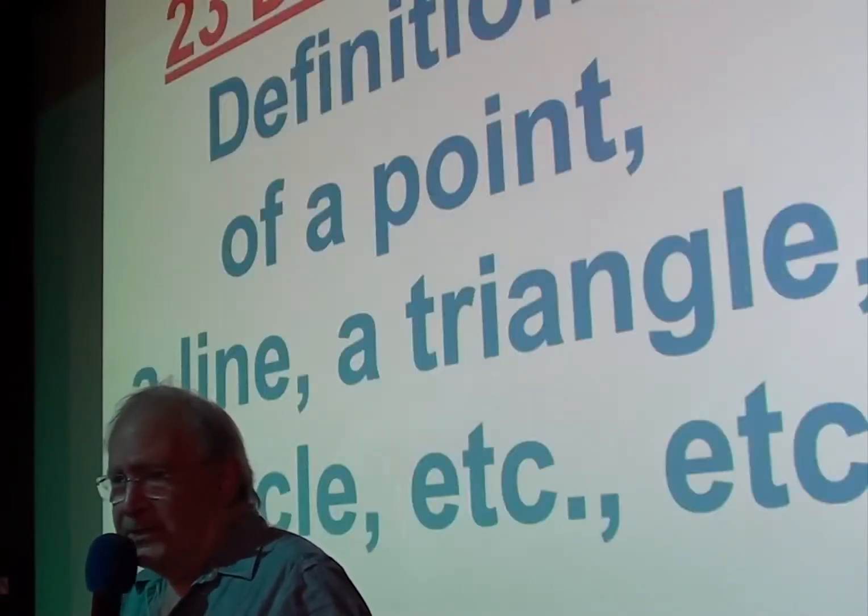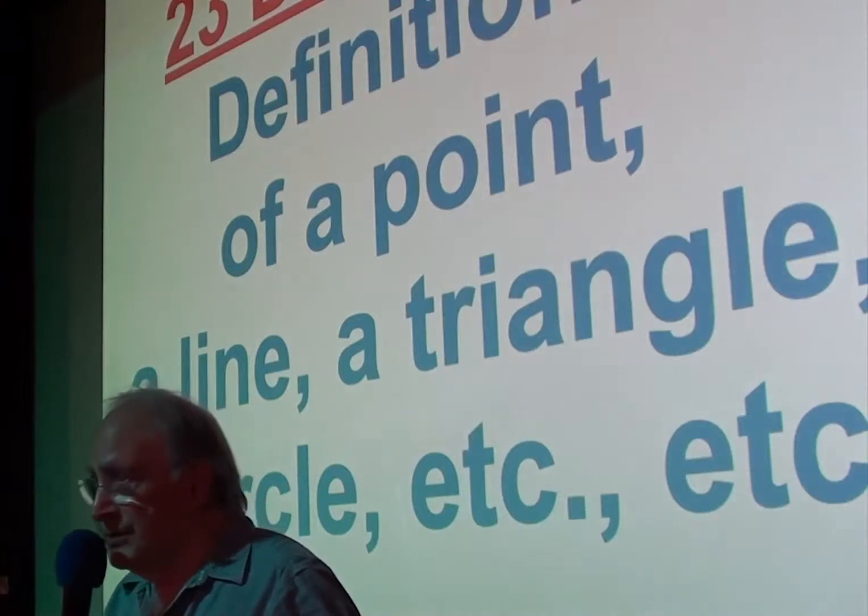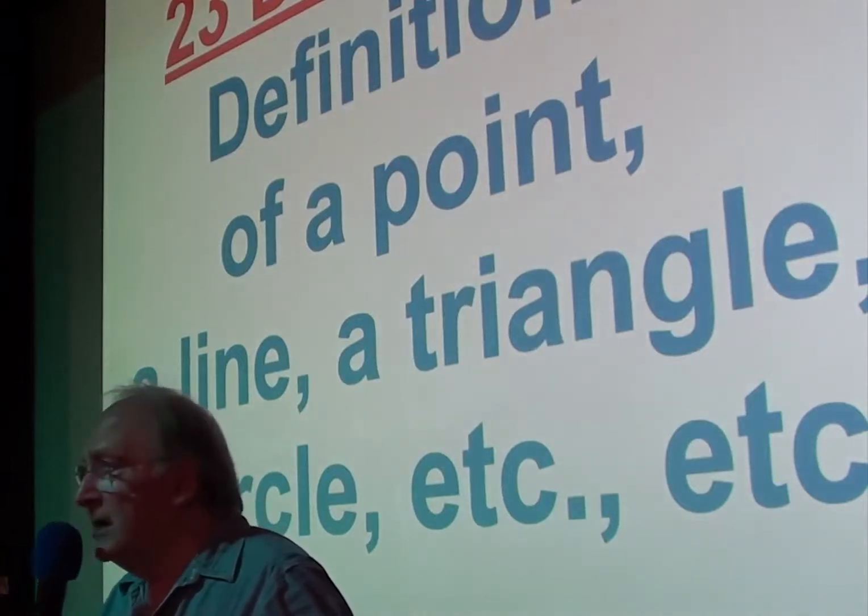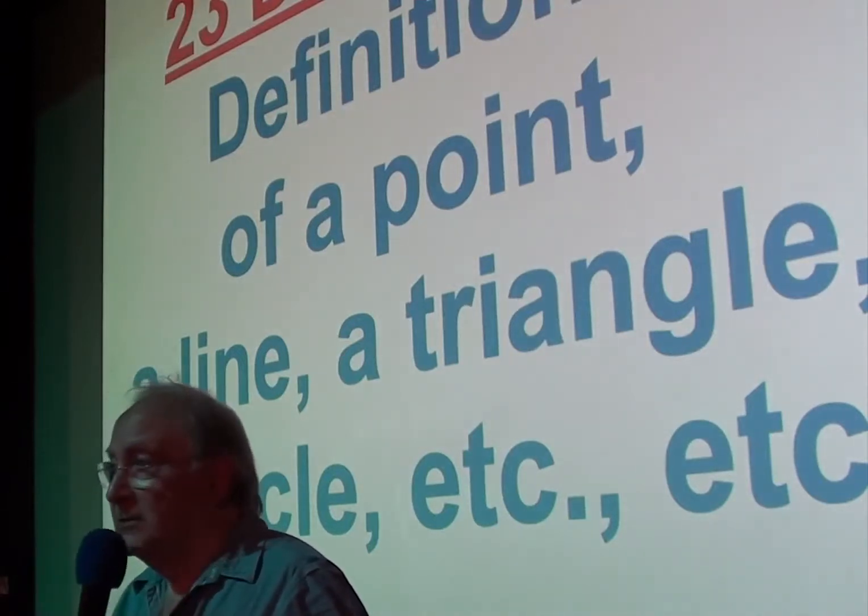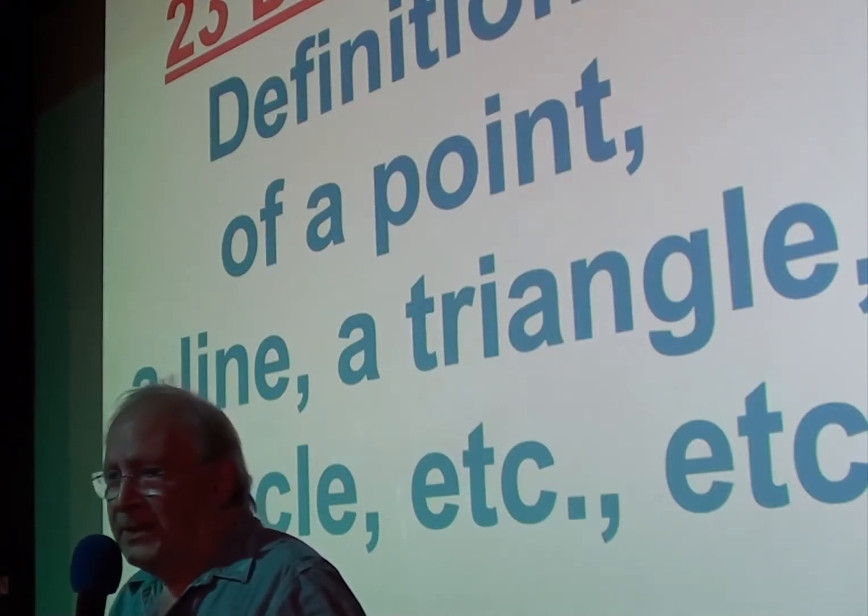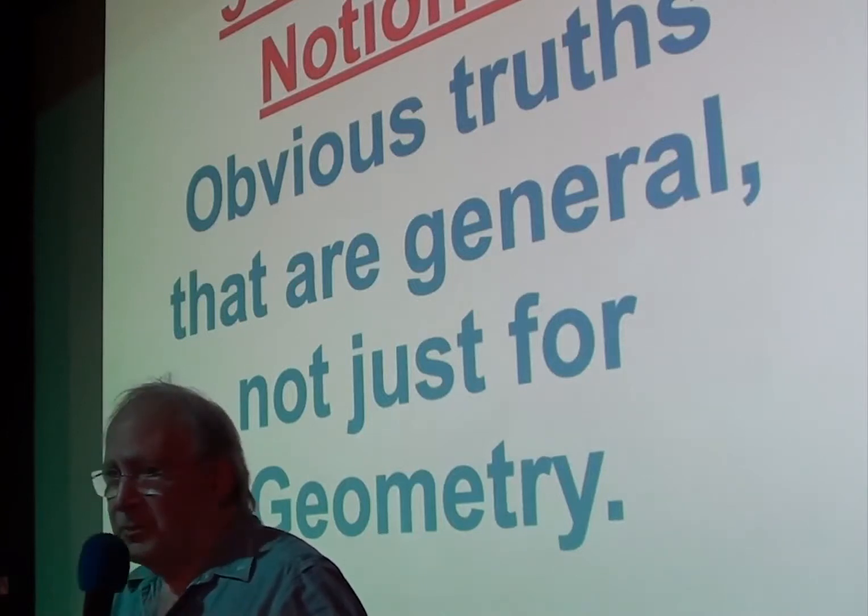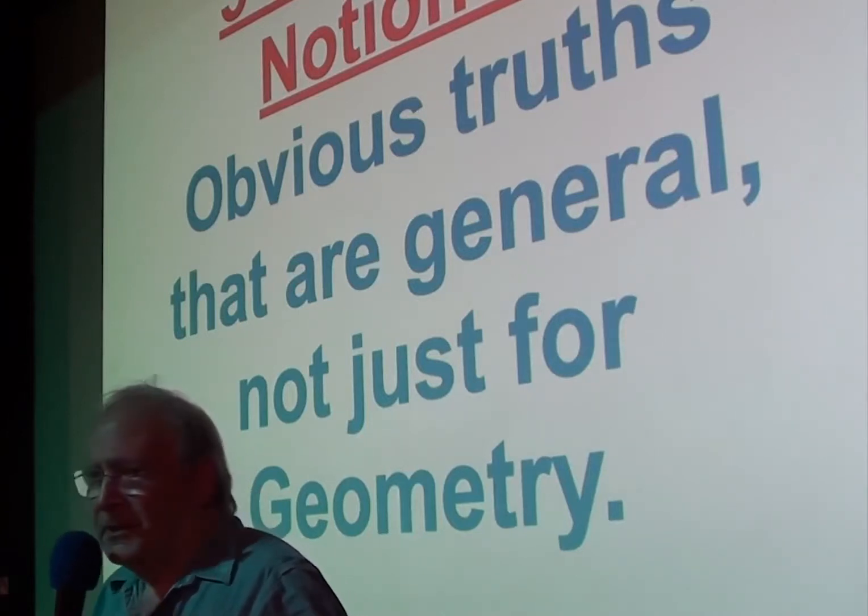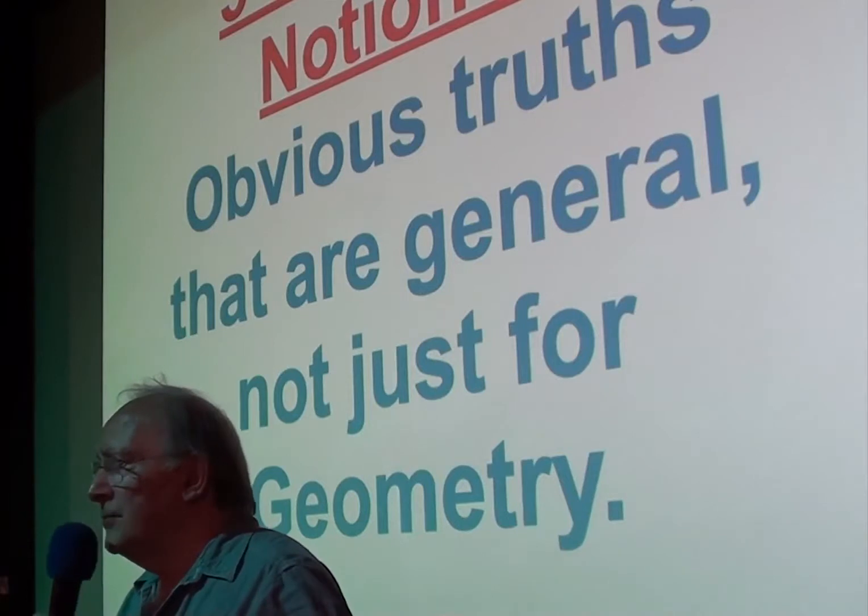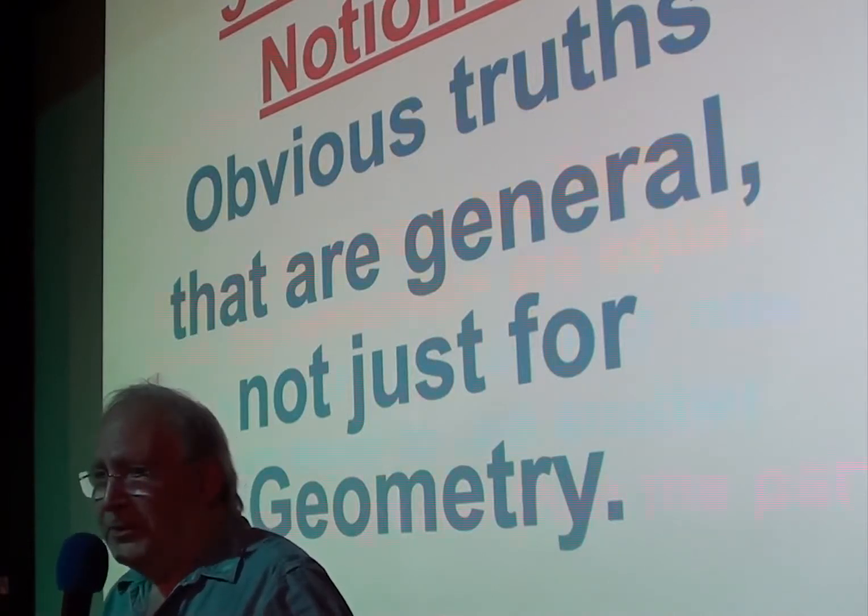So what did he do? He started off with 23 definitions of point, a line, a circle, a triangle, etc. And then he had five common notions, which were sort of obvious truths that are general, not just for geometry. What were these?